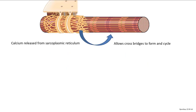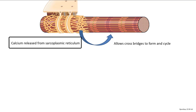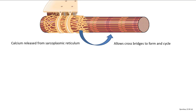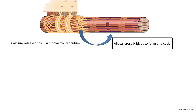To review: when a muscle is stimulated, the sarcolemma is depolarized, which depolarizes the T-tubules and causes calcium to be released from the sarcoplasmic reticulum. Calcium binds to troponin, which moves tropomyosin, which allows myosin to bind to actin, and cross-bridge cycling occurs until the stimulus stops.